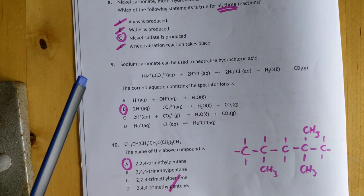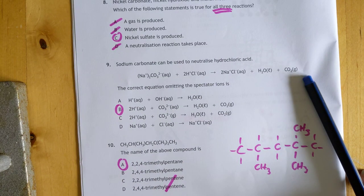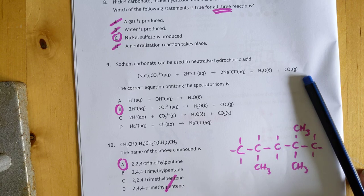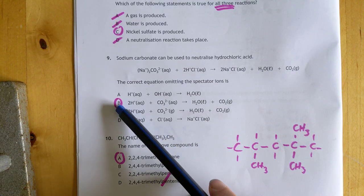Sodium carbonate can be used to neutralize hydrochloric acid. They've given you the equation. You're looking for spectators and then take them out. Spectators don't change the charge or the physical state in any way. According to my calculations, the answer is B.